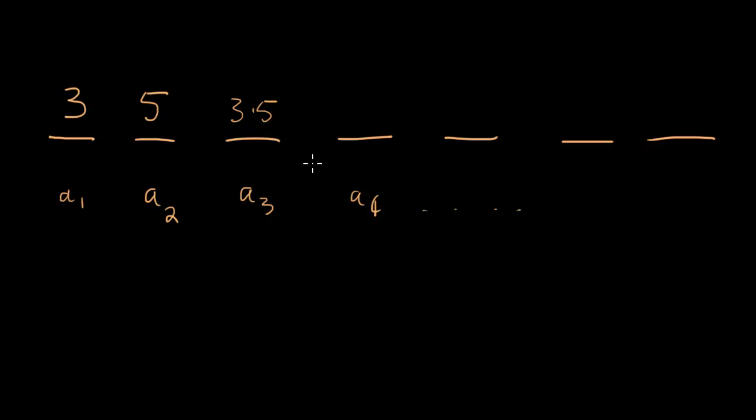And the fourth term, which will be just the product of everything before it, is going to be 3 times 5 times 3 times 5. Or if we just rearrange the different items, if we just think about the 3's, it'll be 3 times 3, or 3 squared. And 5 times 5, or 5 squared.